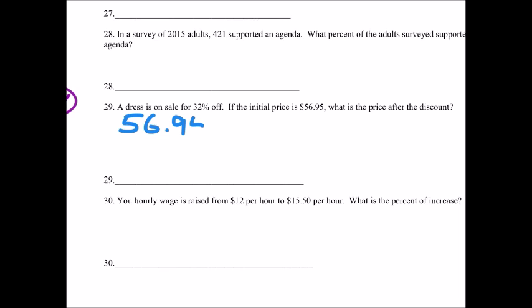We have $56.95, we're going to multiply that by 32% because the proportion sets up like this: we have 32 over 100, which is the full price, equals x over $56.95.